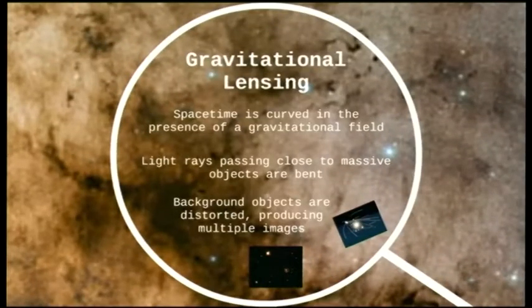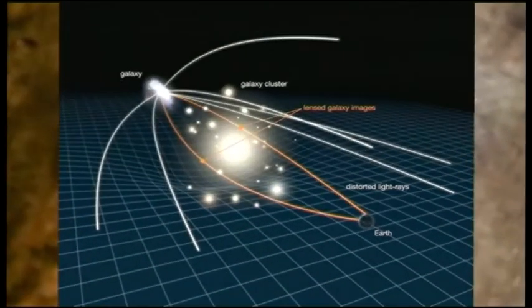So just a brief bit about gravitational lensing. As Nick was talking about earlier, space-time is curved in the presence of a gravitational field. The effect of that, as light rays passing close to the massive object are bent, which means that the background objects are distorted, producing multiple images. So just got a couple of little diagrams here. You can see here, we've got the background object here, the lens here, which in this case is a galaxy cluster. Observing from the Earth here, you can see the effect of the mass of the galaxy cluster there on the background object. The light rays are deflected, and you see these as two separate images here on either side.